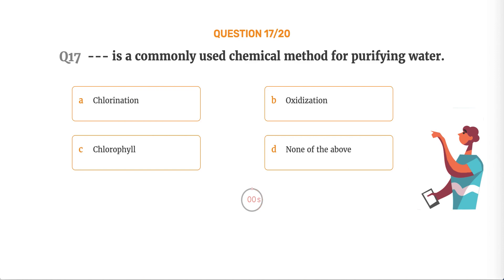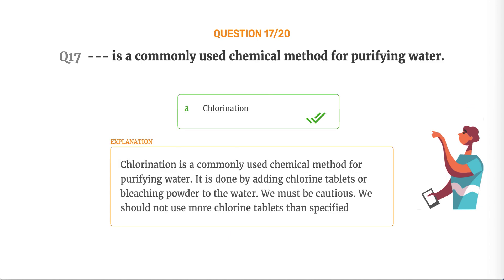The correct answer is Option A, Chlorination. Chlorination is a commonly used chemical method for purifying water. It is done by adding chlorine tablets or bleaching powder to the water. We must be cautious and should not use more chlorine tablets than specified.